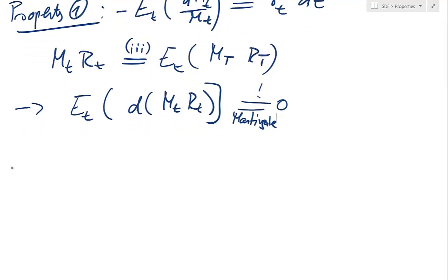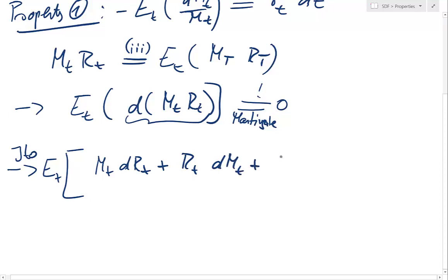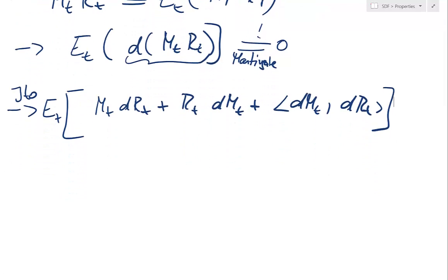That is what has to hold if the product mₜ · rₜ is indeed a martingale — that's the martingale property. Therefore we just do a simple Itô calculus application. Now what is d(m · r)? The expectation we just leave it on the left, and now we have the product rule: mₜ drₜ plus rₜ dmₜ plus dmₜ drₜ. And that needs to be 0 for the martingale property.